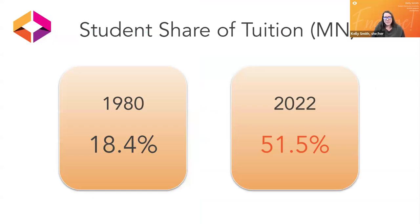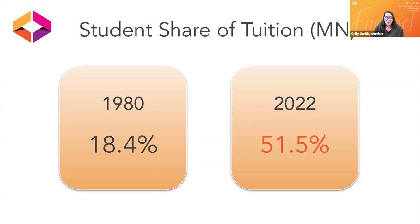This slide shows data for Minnesota, but it can be customized to your local context. The slide deck notes include a link to a spreadsheet listing this data for each state, compiled by the State Higher Education Executive Officers Association. This comparison from 1980 to 2022 acknowledges the way that more and more of the expenses of education have shifted from public funding — from state and federal sources — down to individual students and their families absorbing more of those costs.